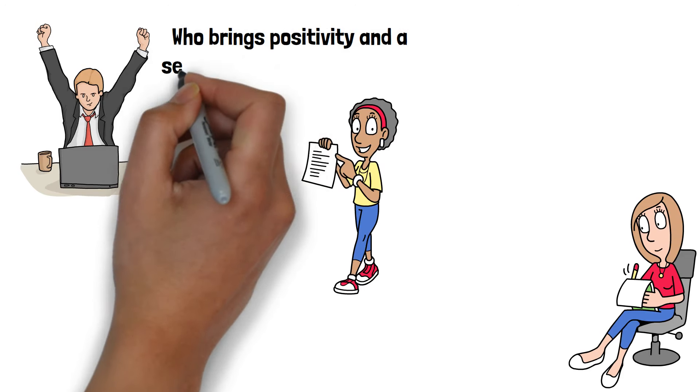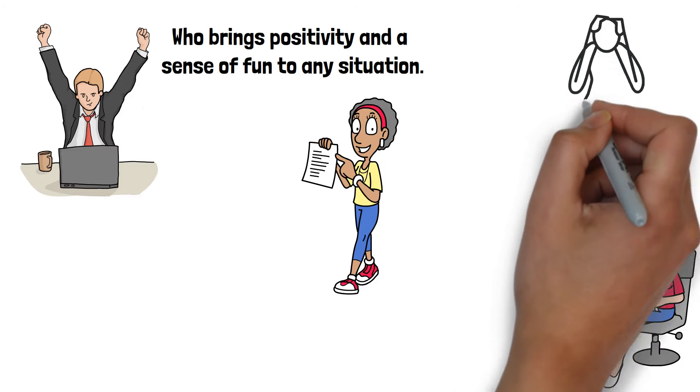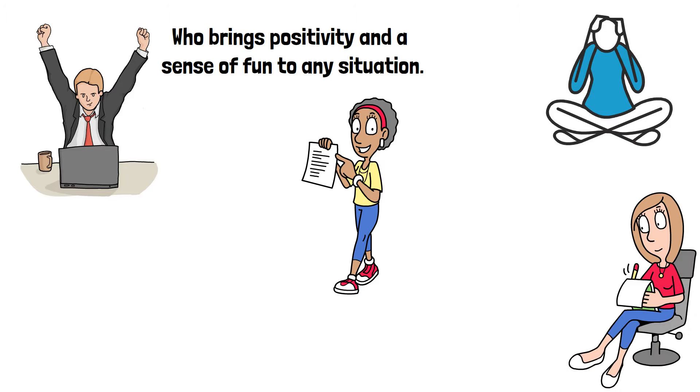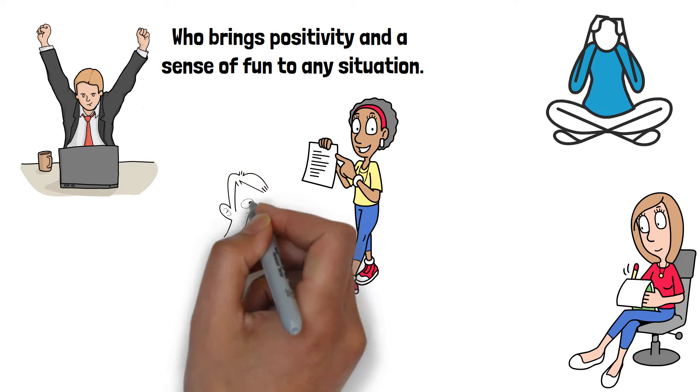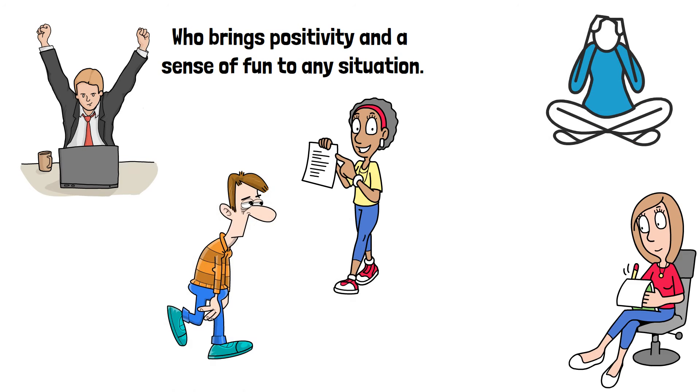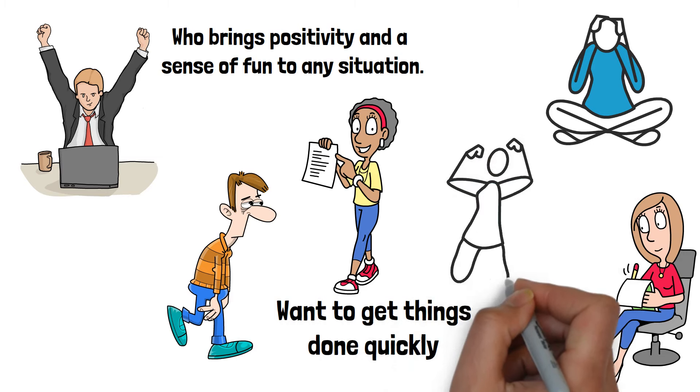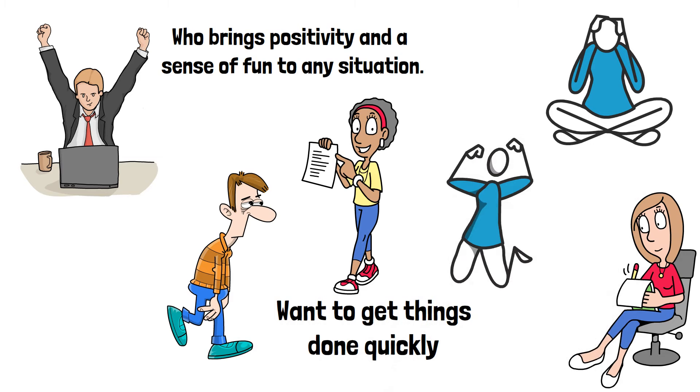A slash can denote irritability or impatience. If your I dots look more like slashes, it suggests that you might have a quick temper or tend to be impatient. This kind of marking indicates that you are decisive and want to get things done quickly. You might be someone who gets frustrated easily when things don't go as planned and prefers to move at a fast pace. This trait reflects a person who is driven and often in a hurry to achieve their goals.